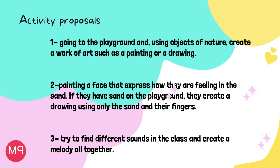Now I will be presenting different activity proposals. One activity that could be done in a primary school class involves going to the playground and using objects from nature to create a work of art such as a painting or a drawing. Another possible activity could be painting a face that expresses how they are feeling in the sand, creating a drawing using only sand and their fingers. Finally, to do something different, they could try to find different sounds in the class and create a melody all together — using the sound of their clothing, a pulse, touching a table, or the sound a paper makes when you move it. After creating the song, they should try to identify if it sounds like a sad song, a love song, a happy song, etc., finding the emotion they were feeling while creating it.